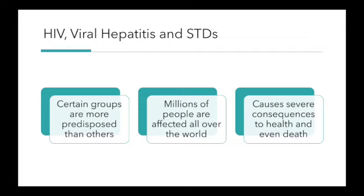It's kind of a combination of those three. This is important because certain groups are more predisposed than others. Millions of people are affected all over the world, and it can cause severe consequences to health, even death. It's considered a health disparity because certain groups are more affected than others, and differences such as race, gender, income, education, sexual orientation, and geographical location can affect how people are exposed. Many people of all ages are affected each year, and the numbers continue to rise. If left untreated, patients can become severely ill or even die from these diseases.